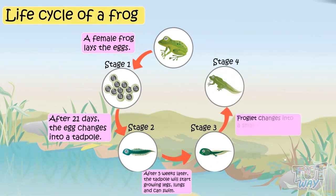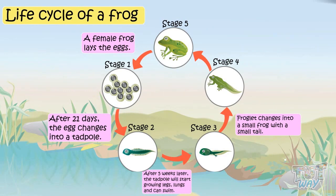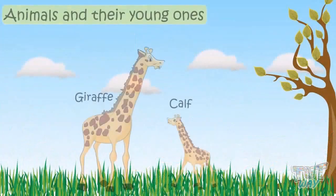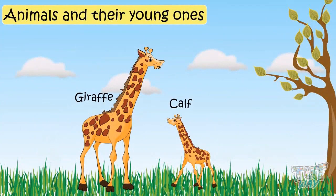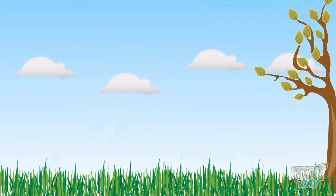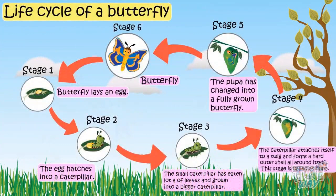After about five weeks, the tadpole starts growing legs and lungs and can swim. Gradually it changes into a small frog with a small tail — this is called a froglet. The froglet keeps on changing into a fully grown frog, and the tail starts vanishing until there is no tail left. So kids, today we learned about many animals and their young ones, and also the growth and changes of animals like the butterfly and the frog.